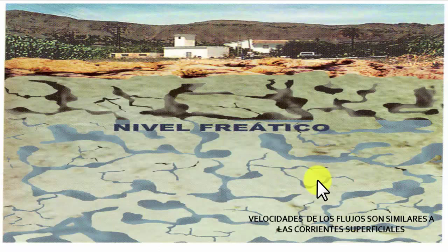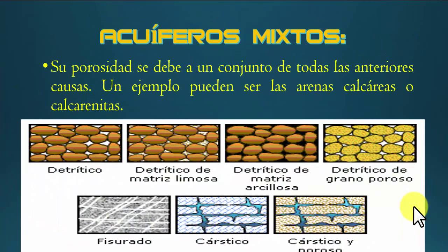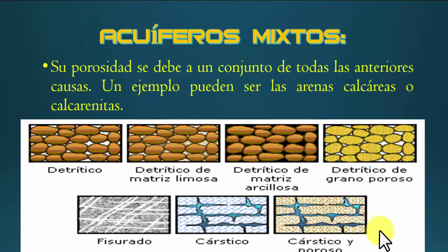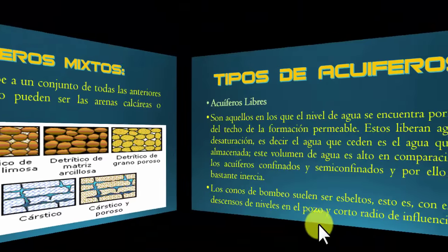Los acuíferos costeros casi siempre presentan formaciones cársticas, lo que permite que por lo general sean acuíferos muy abundantes. El problema de estos acuíferos es la calidad por la intrusión marina. También tenemos acuíferos mixtos donde encontramos formaciones diversas conjugadas: los detríticos de matriz limosa, los de matriz arcillosa más compacta, los de grano poroso, y también las fisuras y el karst, que son las fracturas abruptas y grandes. La combinación cárstico y poroso es otro tipo mixto, y por eso se llaman mixtos, porque ese tipo de combinaciones pueden aparecer juntos o separados.